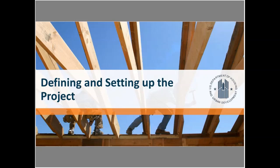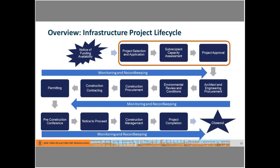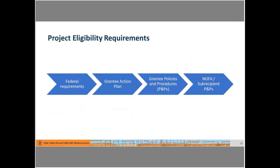As is common in all good project management plans, investing front-end time and thoughtful planning into the design of a project is critical for success. In this section, we're going to be talking about the first three components of the project life cycle: selecting and submitting the application, the subrecipient capacity assessment, and project approval.